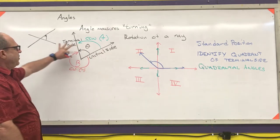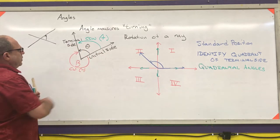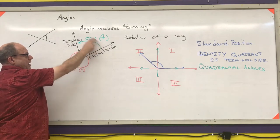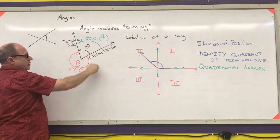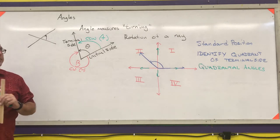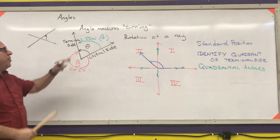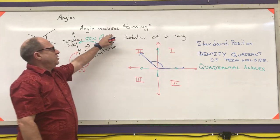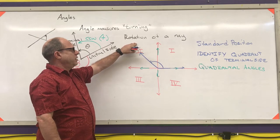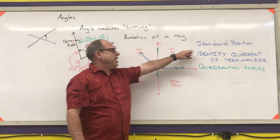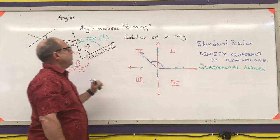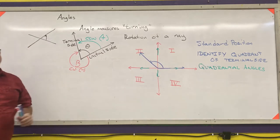This is just basics — nothing really hard here. The biggest thing to remember is counterclockwise for positive angles and clockwise for negative angles, and that an angle measures turning and comes from a rotation of a ray. Be able to draw angles in standard position.